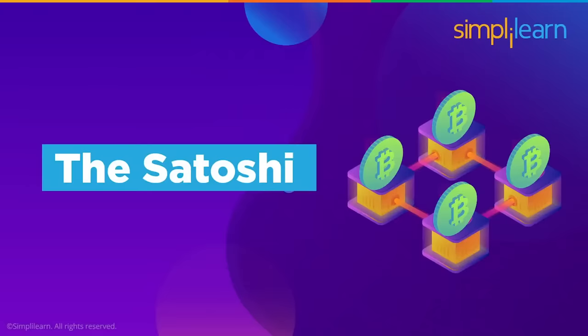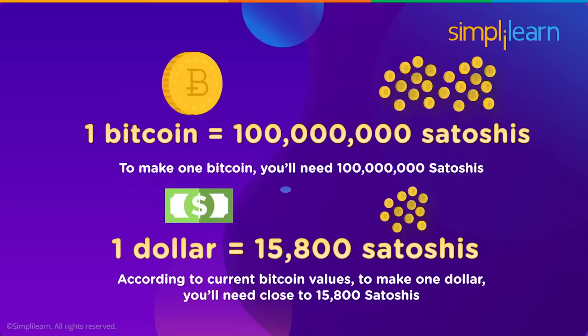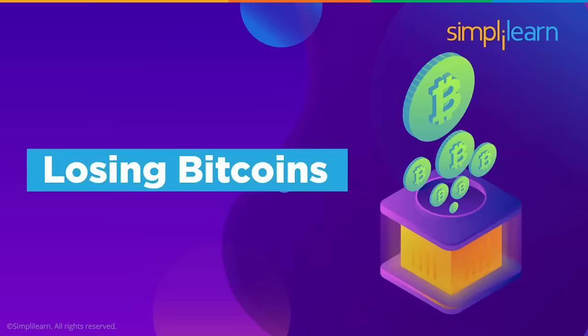Next is the Satoshi. As a sign of respect for Bitcoin's creator, the smallest unit of a bitcoin is known as a satoshi. One satoshi is valued at around $0.00006694 US dollars — a very low value. To make one bitcoin you need approximately 100 million satoshis. According to current bitcoin values, which fluctuate a lot, to make one dollar you'd need close to 15,800 satoshis.